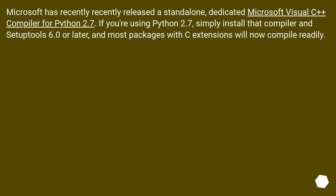Microsoft has recently released a standalone, dedicated Microsoft Visual C++ compiler for Python 2.7. If you're using Python 2.7, simply install that compiler and setuptools 6.0 or later, and most packages with C extensions will now compile readily.